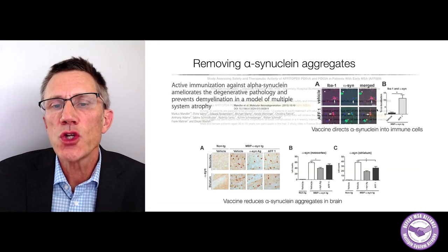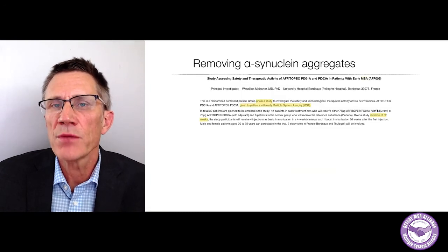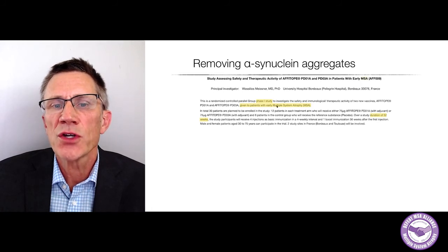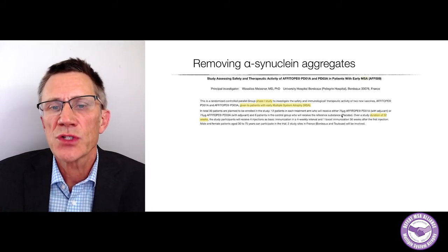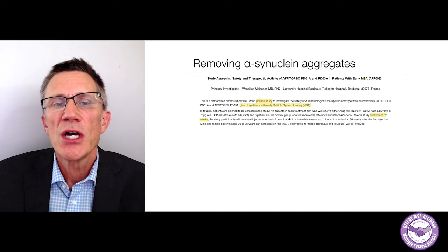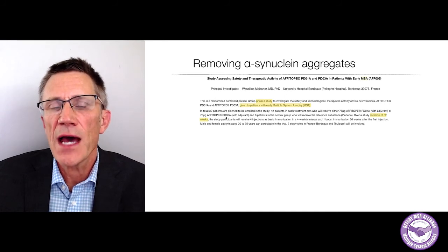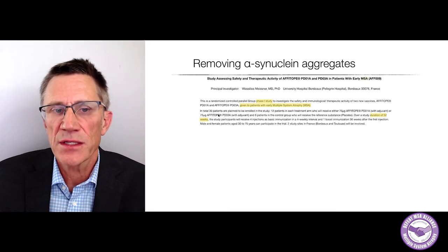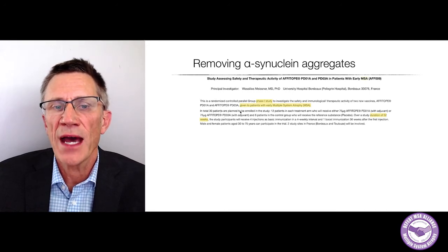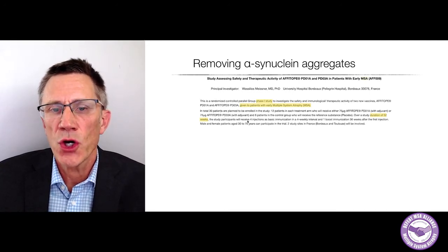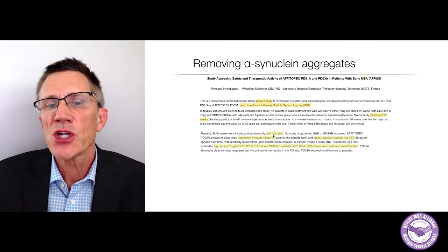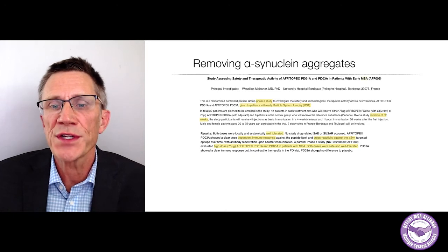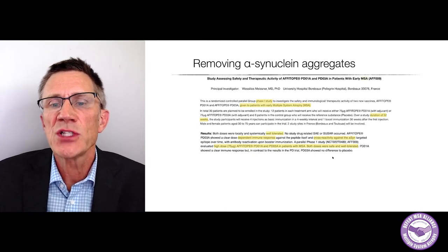Instead of accumulating in neurons or oligodendrocytes, the synuclein was directed into immune cells. There was lots more synuclein present in the immune cells as they tried to degrade it. This has now led to clinical trials both in Parkinson's disease and MSA. There's been a phase one trial in MSA completed a couple of years ago, using vaccines from the company Athena called Affitope.